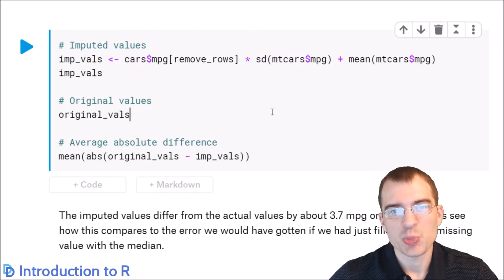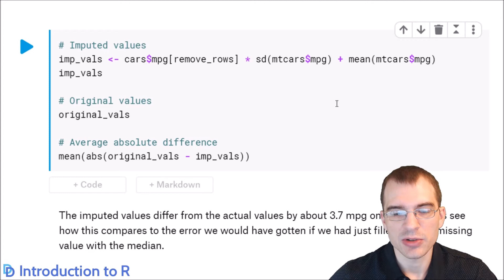To get the MPG values back on their original scale, we can go back to the original mtcars dataset and use the values there to convert back. We simply have to reverse the operations that are done when centering and scaling. We divide by the standard deviation normally, which means we're going to multiply by the standard deviation here. We normally subtract the mean, so we're going to add the mean back on. After we do that, we can check what the original values were and the difference between the imputed values and the original values. This will give us a sense of how good our predictions were.